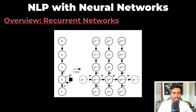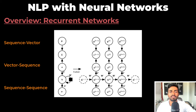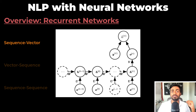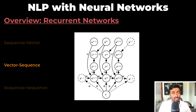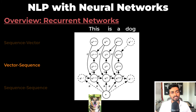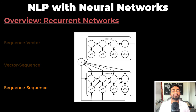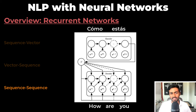Recurrent neural networks are essentially feed-forward neural networks that are rolled out over time, and they can solve three classes of problems related to sequences. The first is sequence-to-vector problems, where the input is a sequence (or a sentence) and the output is a vector — this is like sentiment analysis. The second is vector-to-sequence problems, where the input is a vector and the output is a sequence — this is like image captioning. The third is sequence-to-sequence processing, where the input is a sentence and the output is a sentence — this is like translation, question answering, and many more.